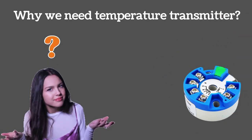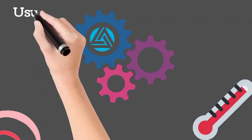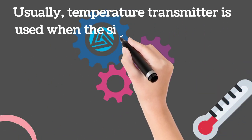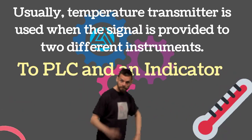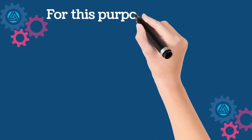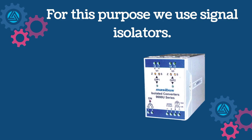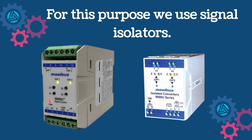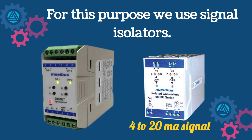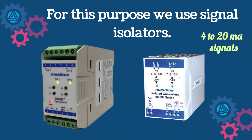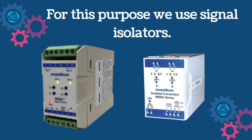Now we will discuss why we need temperature transmitters while we can connect RTD or thermocouple directly. Usually, a temperature transmitter is used when the signal is provided to two different instruments or more than one instrument, like a PLC and an indicator. To provide a transmitter signal to more than one instrument, signal isolators are used. Signal isolators are used in PLC panels and have one input and two or four outputs. The input signal is 4 to 20 mA and the output signals are also 4 to 20 mA, so two outputs may be connected — one at PLC and another at an indicator.